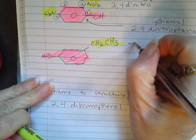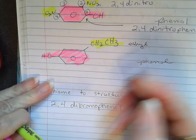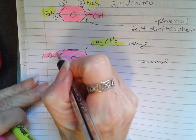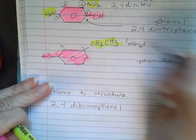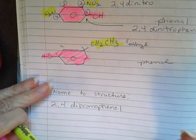This ethyl group, you can use the numbering system here, which would be one, two, three. So you could say three ethyl, but it is also very common to use the ortho meta para.